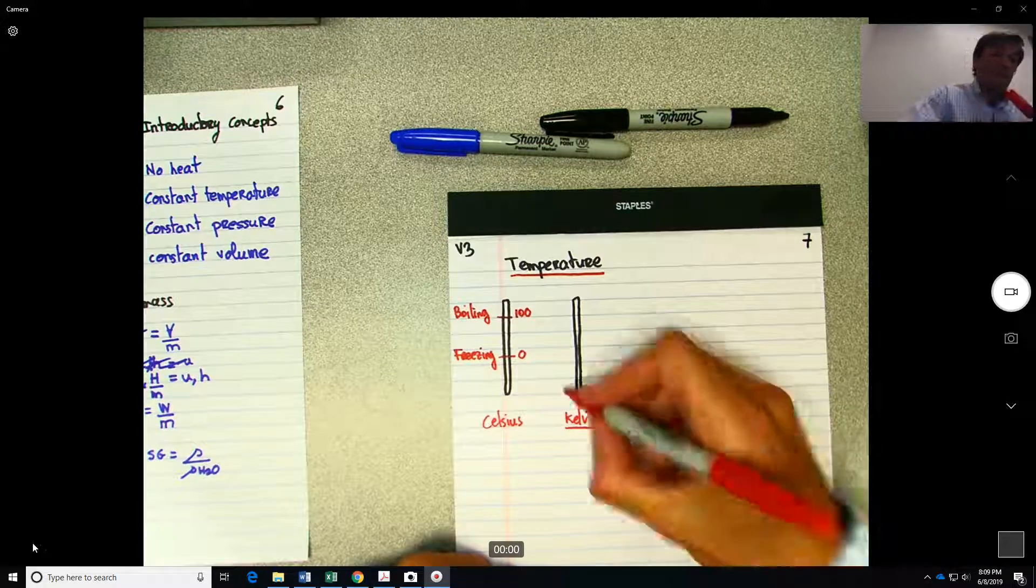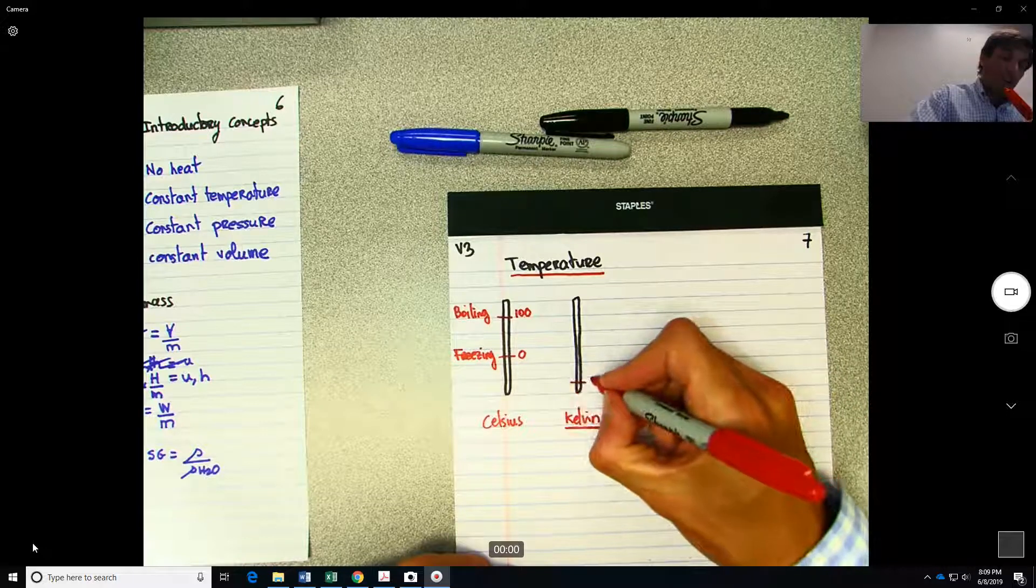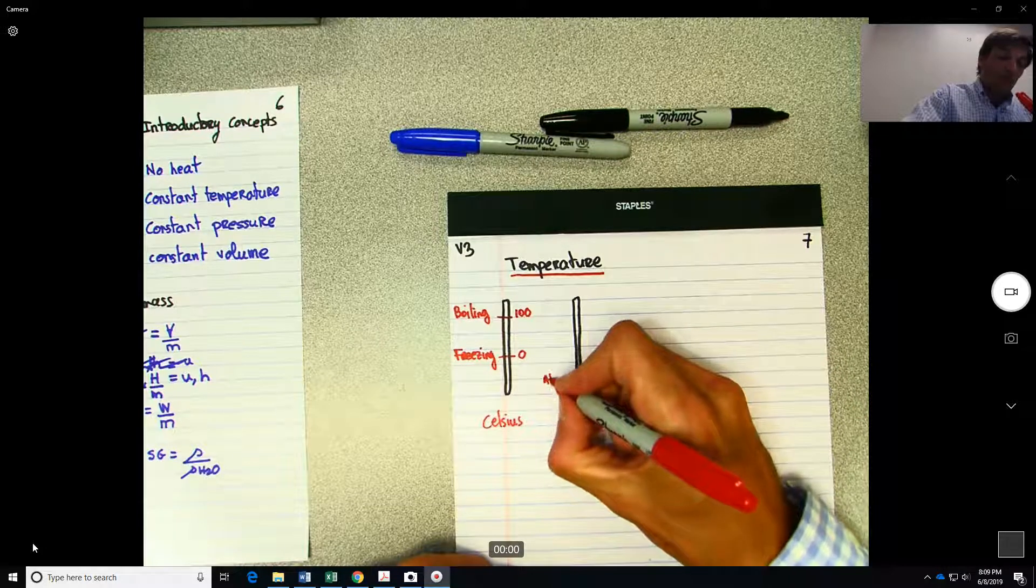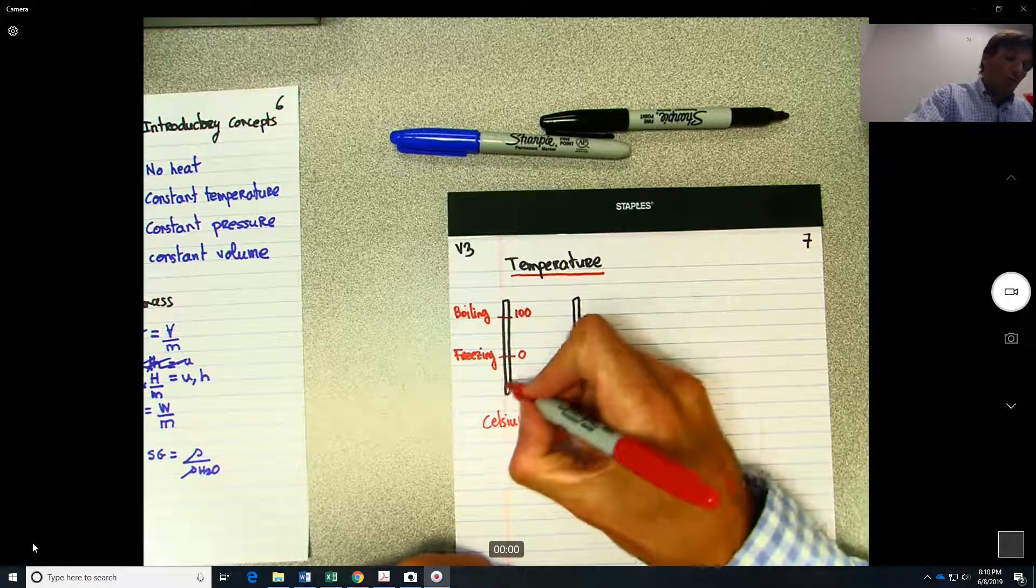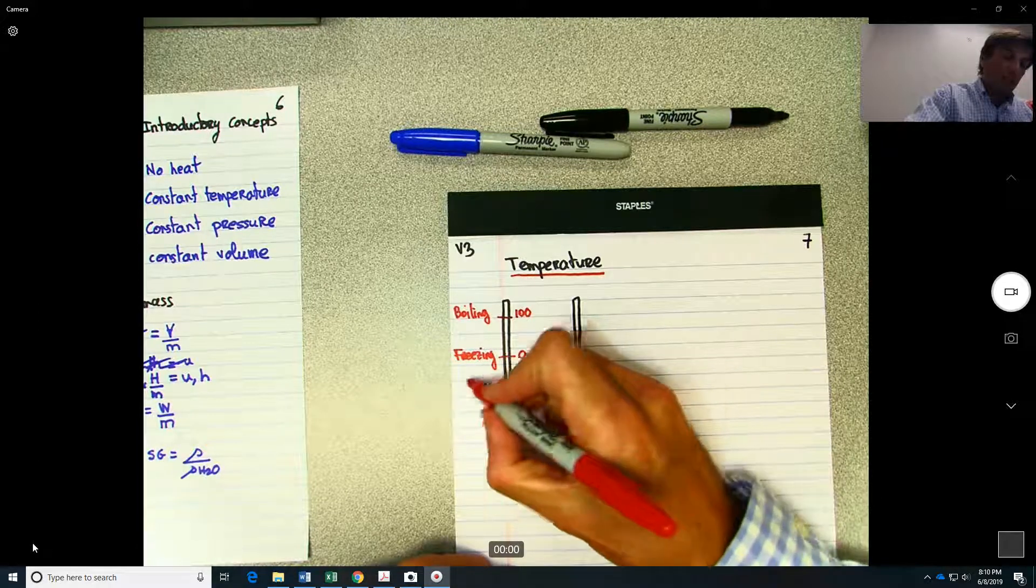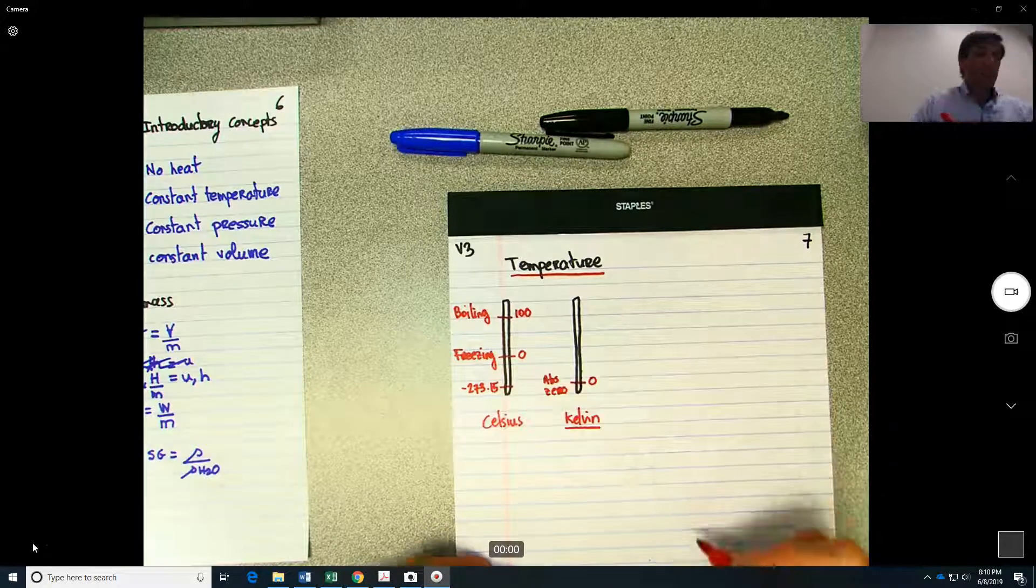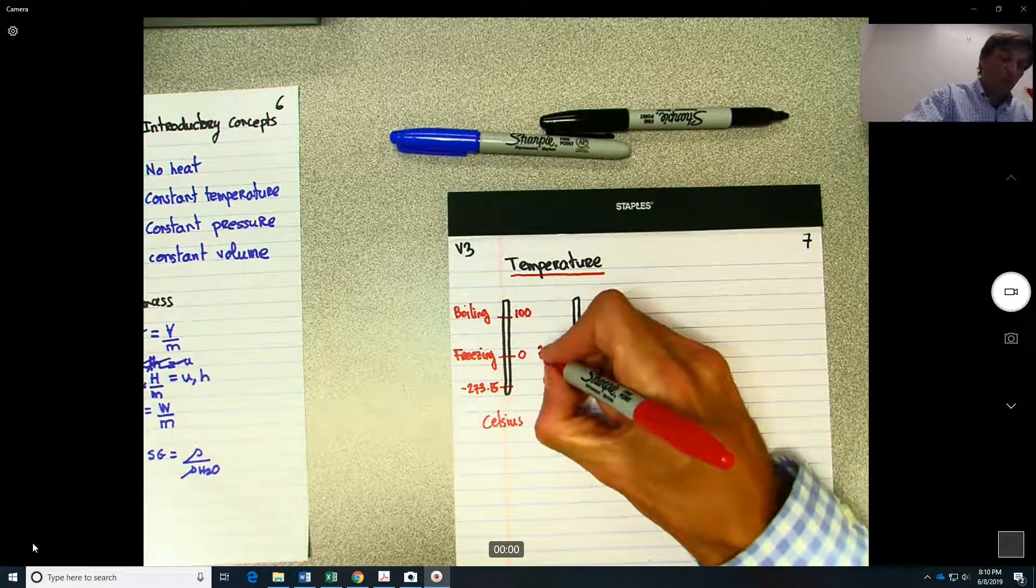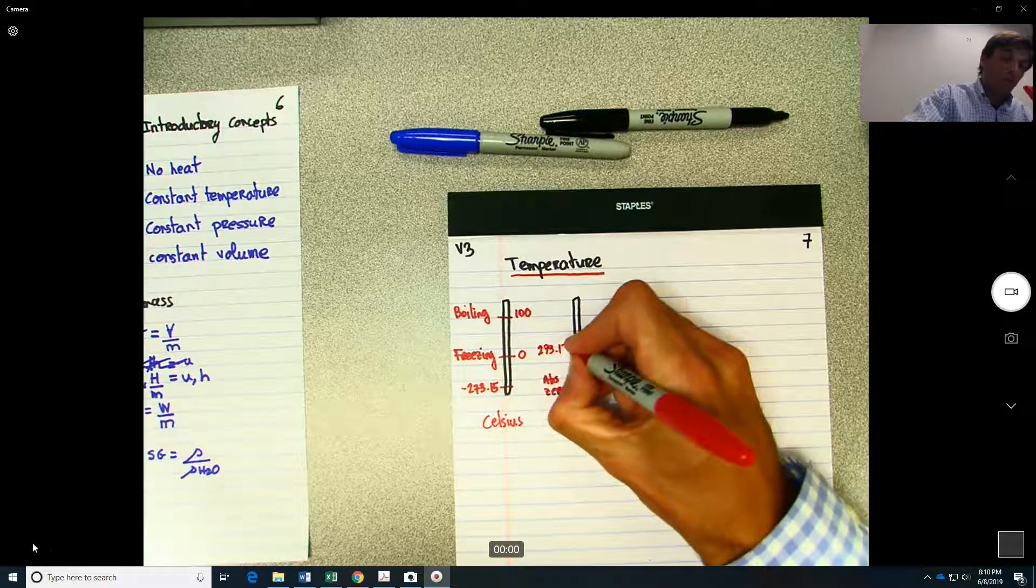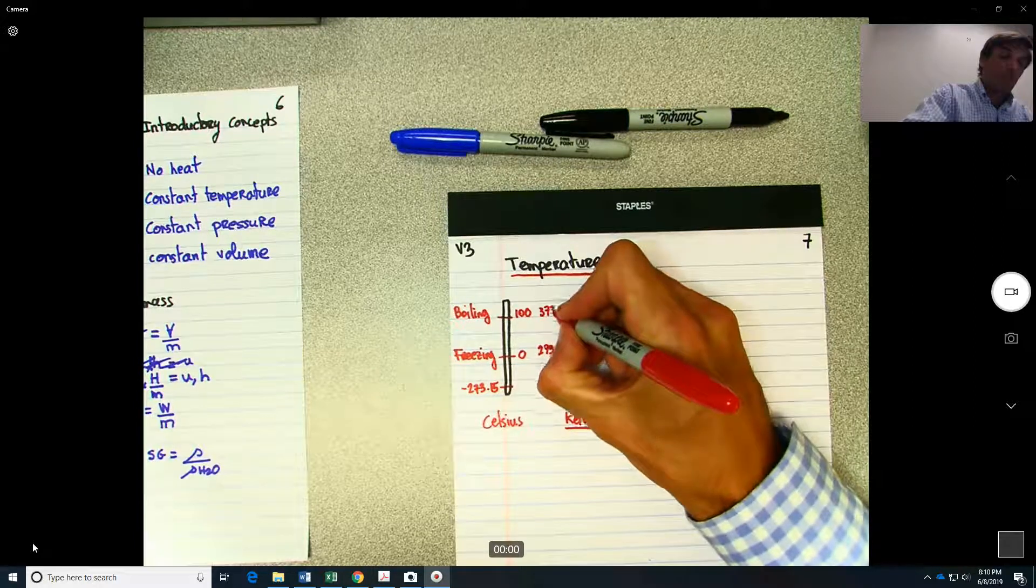And the Kelvin will use the zero here as the absolute zero, which will be minus 273.15 degrees Celsius. So then the freezing would be 273.15 and the boiling would be 373.15.